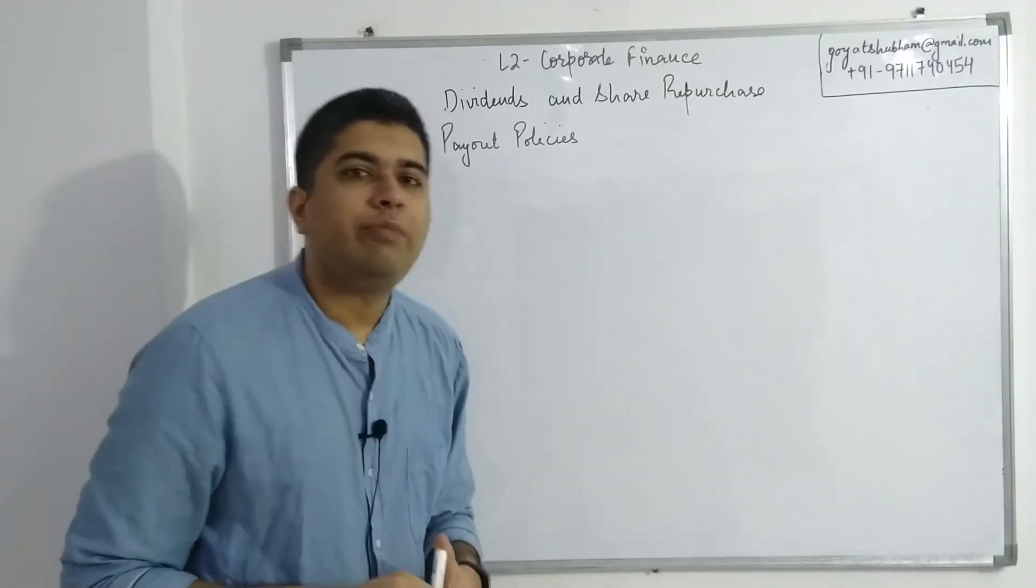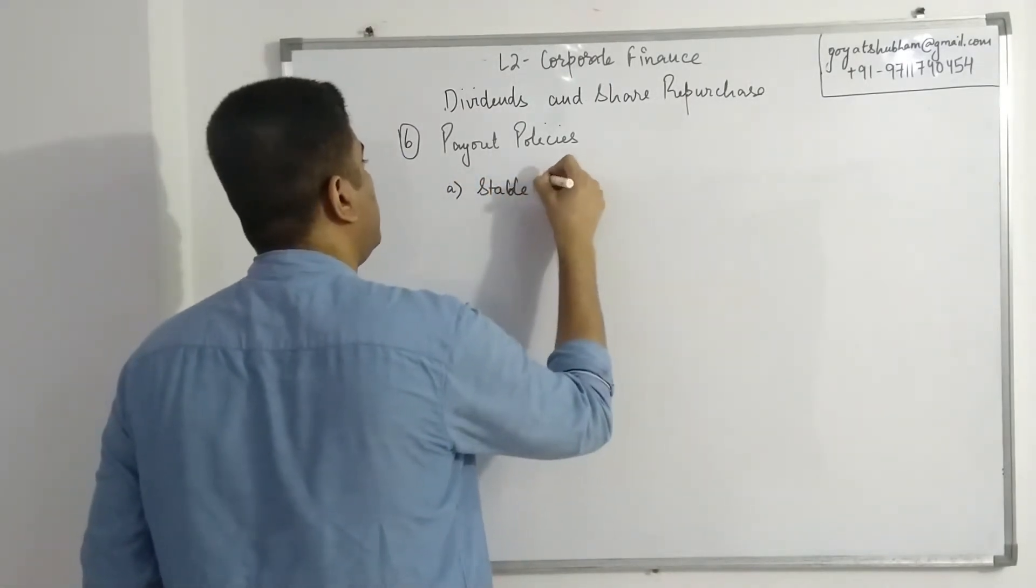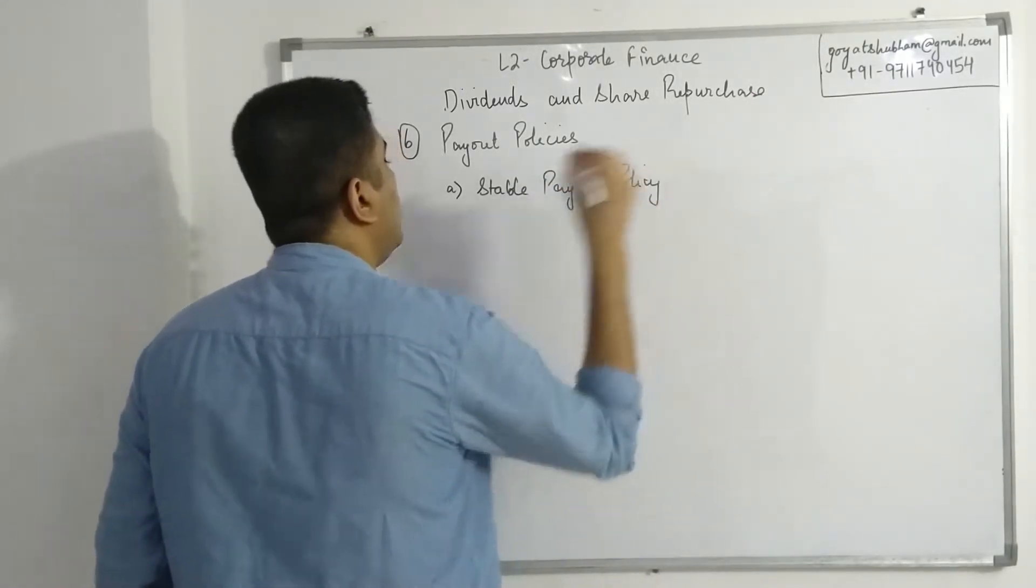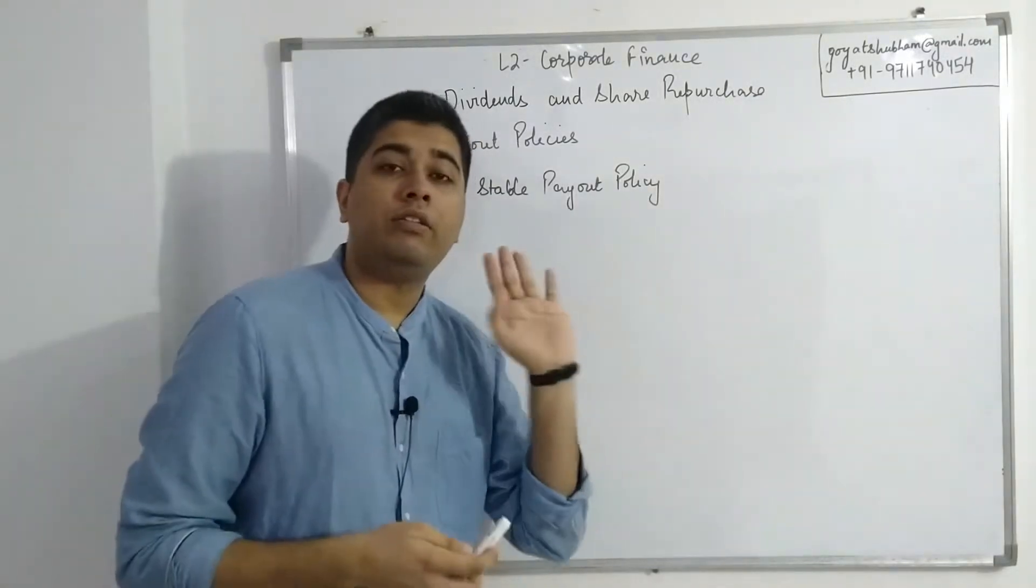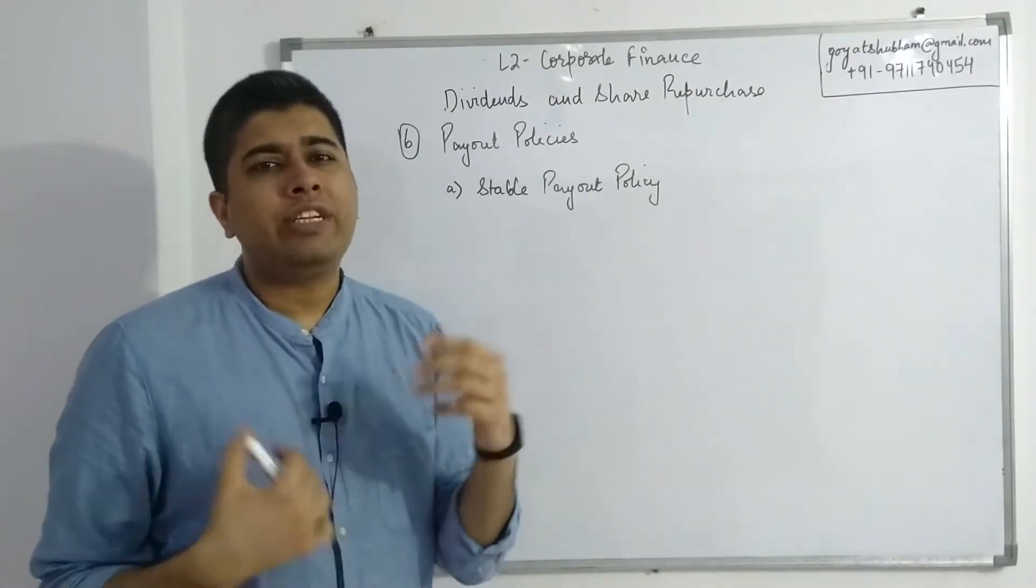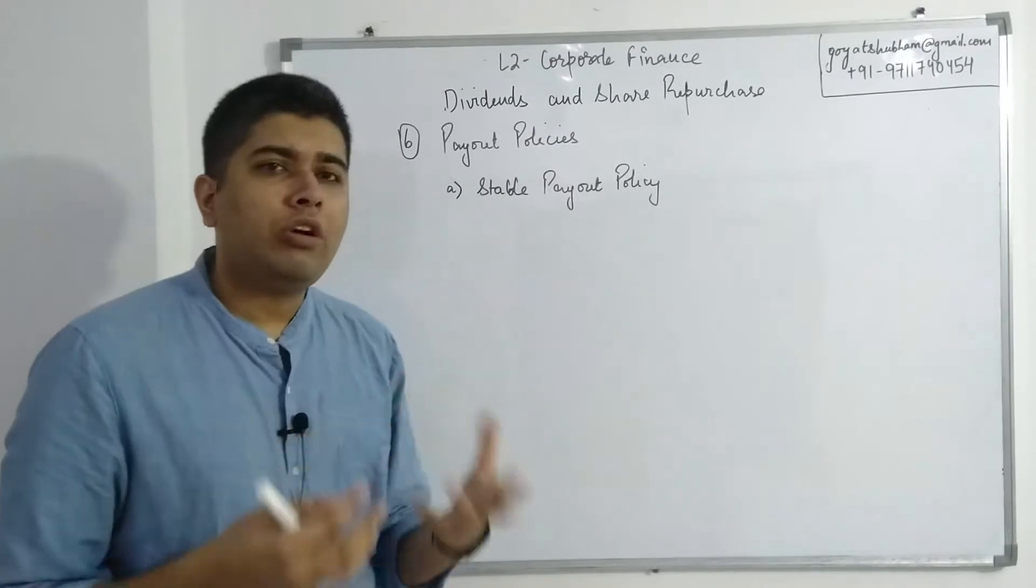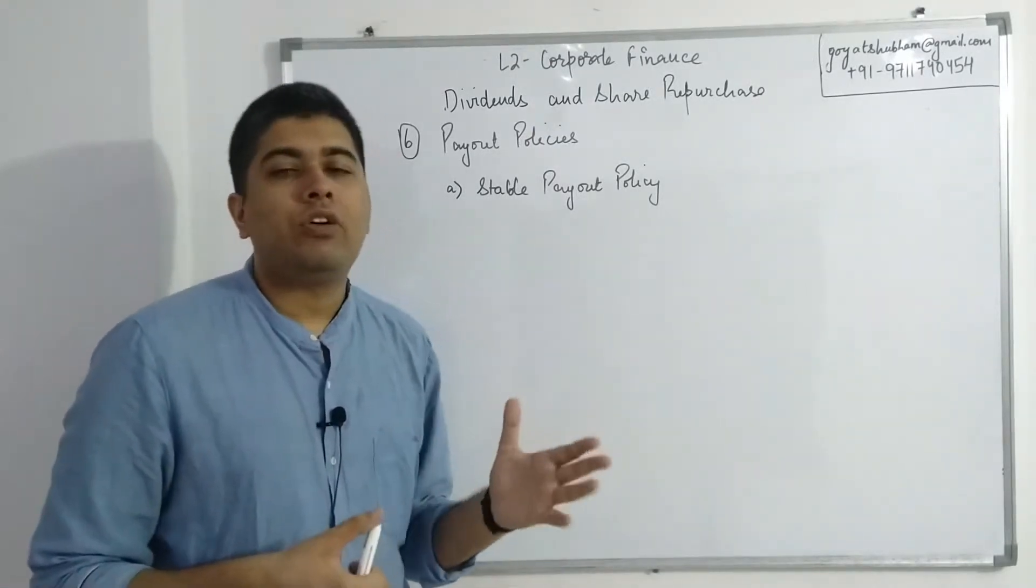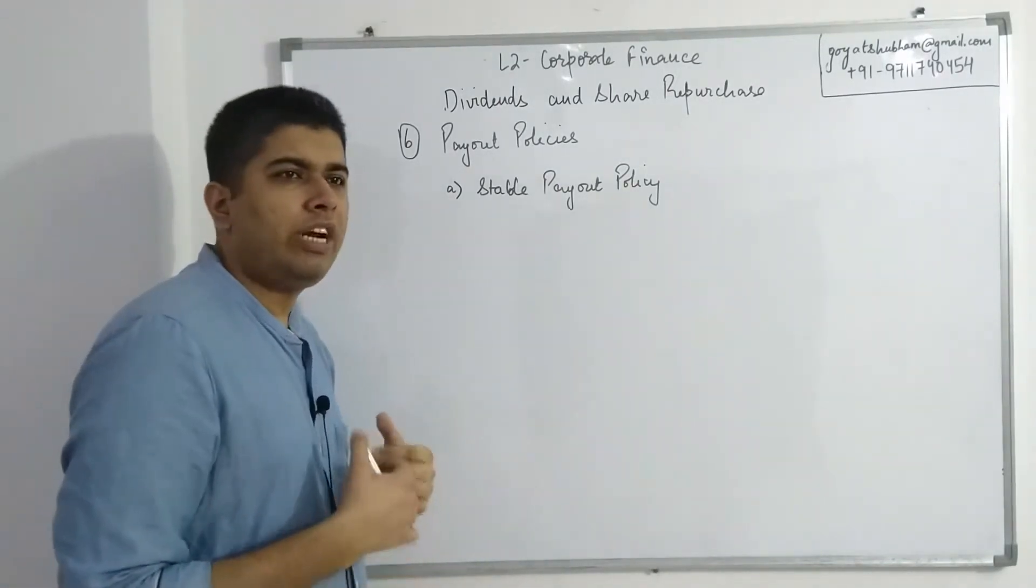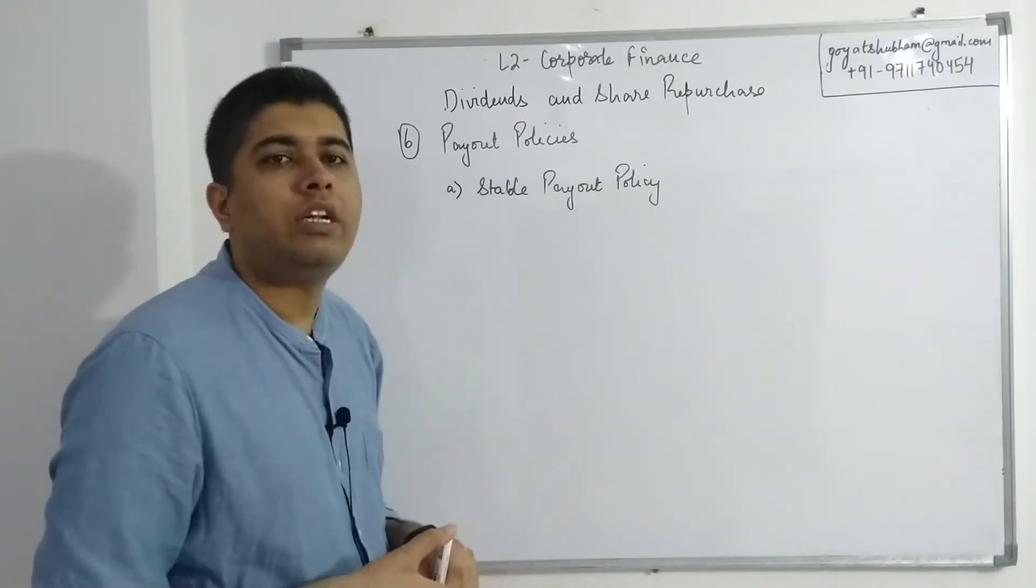Now there are two major categories of payout policies. The first one we have is a stable payout policy. The basic logic behind stable payout policy is that companies want to make sure that the dividends that they are giving out are stable and consistent year on year. Companies normally do not prefer a situation where dividends increase or decrease massively from one year to the next. So stable payout policy is saying that companies will try to create a situation where the dividend payout is consistent from one year to the next.